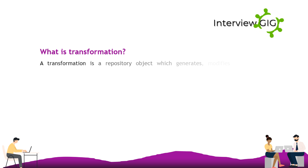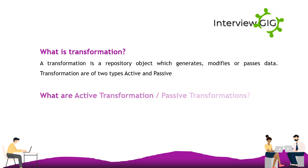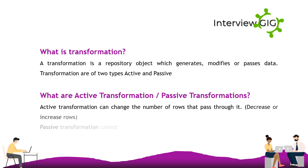A transformation is a repository object which generates, modifies, or passes data. Transformations are of two types: active and passive. An active transformation can change the number of rows that pass through it.